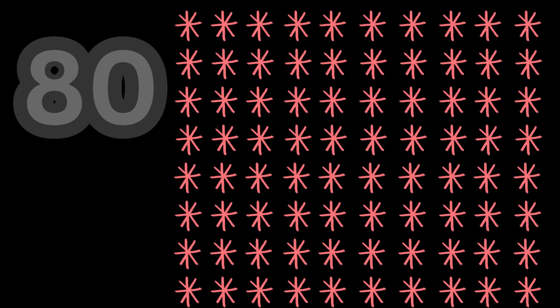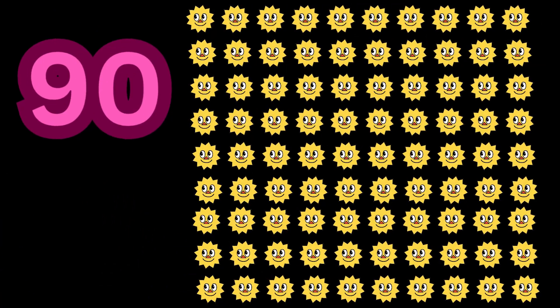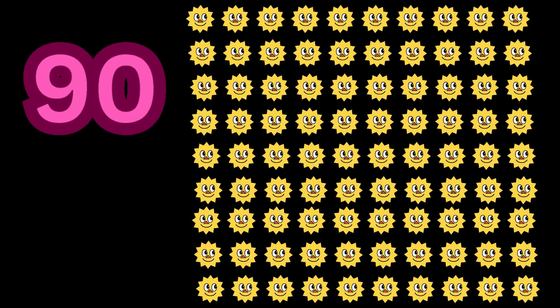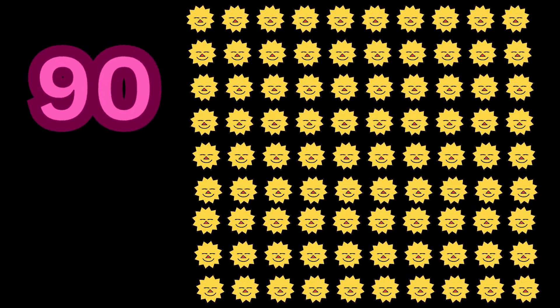Continuing our journey, we count 10 more, bringing us to 70 stars. Progressing further, we reach 80 stars, each one a tiny beacon of light. Almost there, now we're at 90 stars, illuminating the darkness.